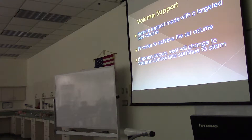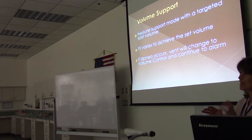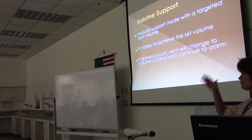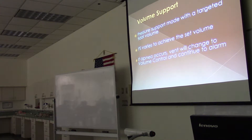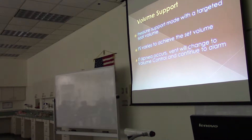So instead of us trying to figure out, 'it looks like the patient could use 10 of pressure support, or 12 of pressure support,' you set a targeted tidal volume, and the ventilator is going to adjust the pressure support up and down to ensure that tidal volume is reached. Now if they're in volume support and they stop breathing, the ventilator will switch over to volume control and start ventilating the patient. But when it switches over to volume control, you get an alarm that doesn't go away.